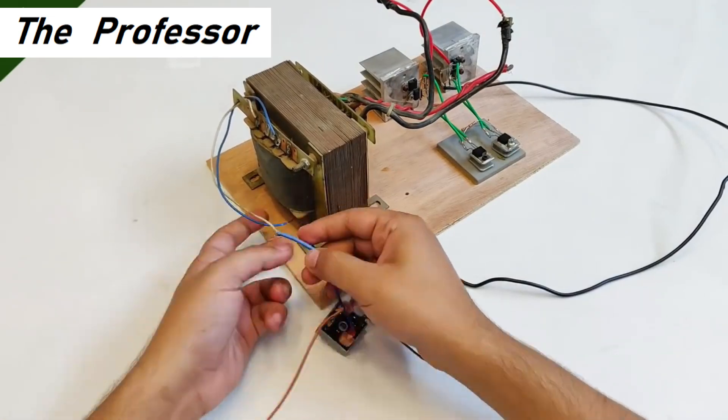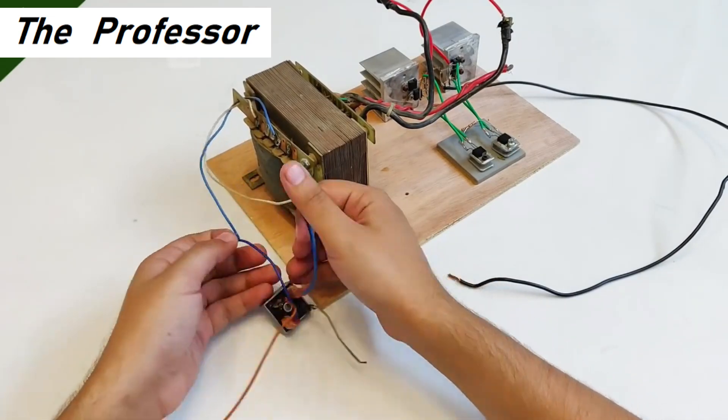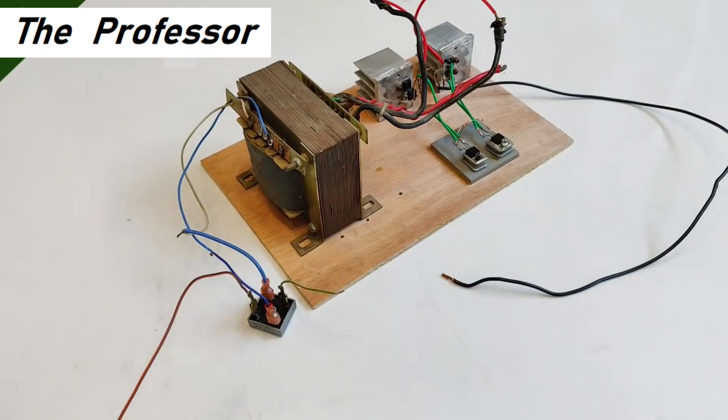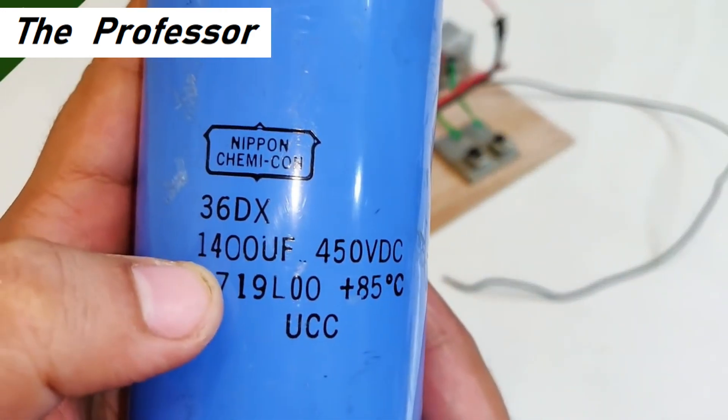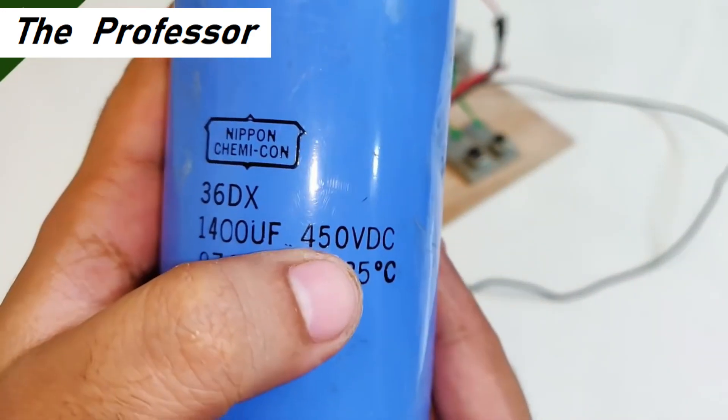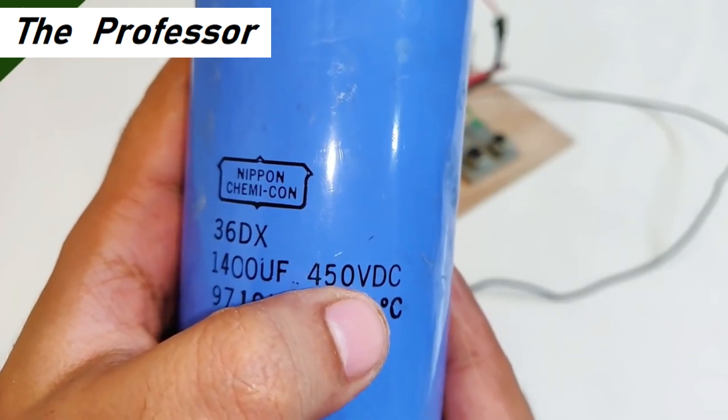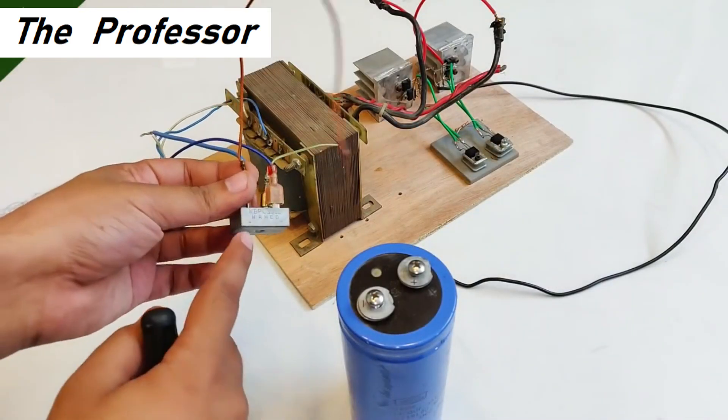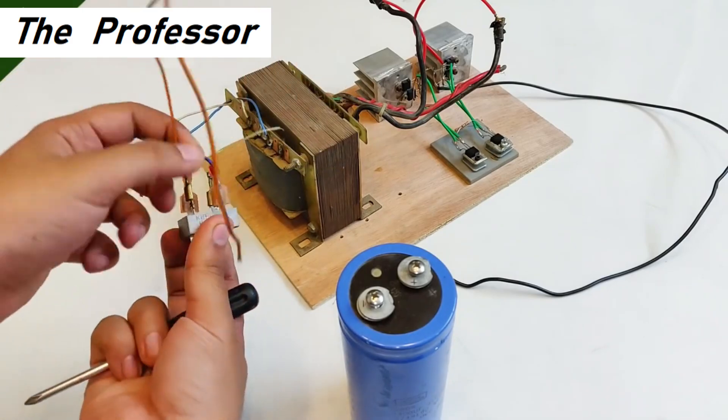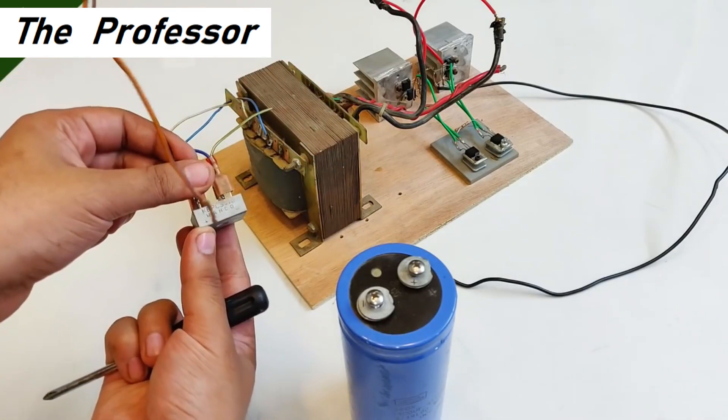Just for safety I'm going to use this large DC capacitor, 1400 microfarad with a voltage of up to 450 volts DC. We have to make sure that the polarity is the same. This orange wire indicates positive from the rectifier, so positive will be connected to positive.